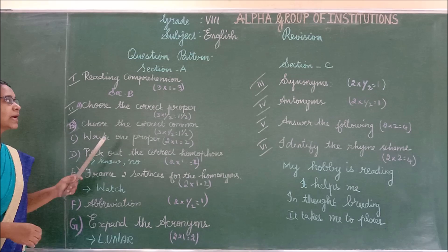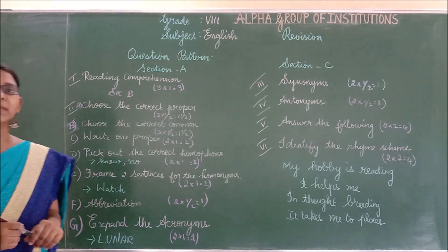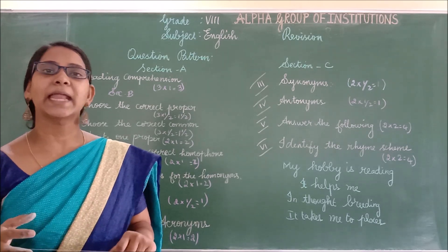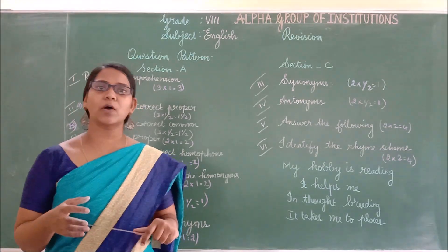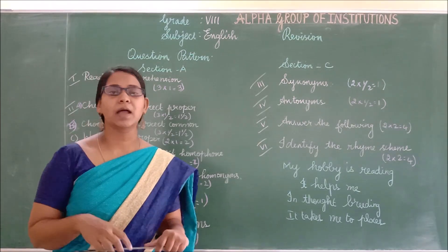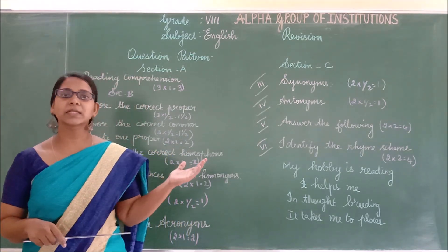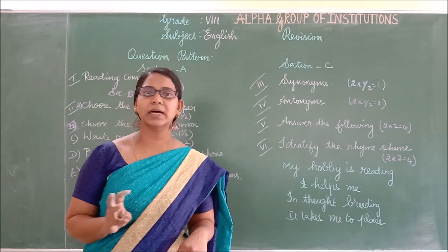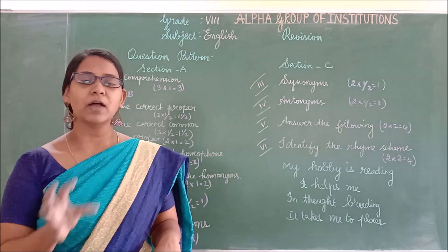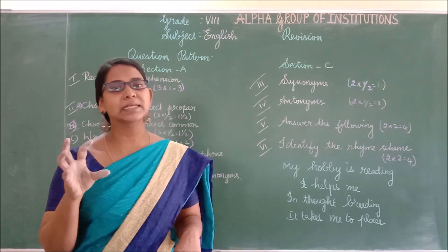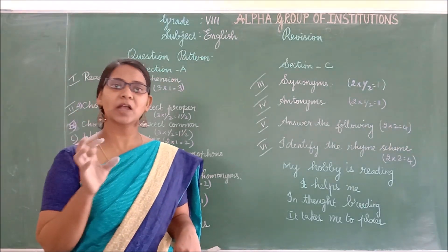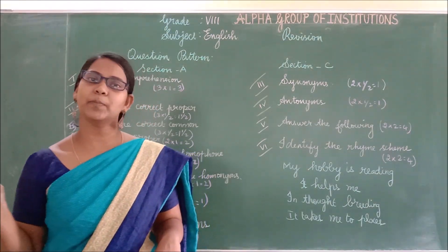Next, choose the correct proper noun. I taught you proper and common nouns, isn't it? A proper noun is the name of a person, place, thing, or animal in particular. A common noun is the name of a person, place, animal, or thing in general. For example: boys — common, Joyer — proper, girls — common, Geeta — proper.